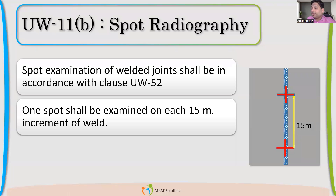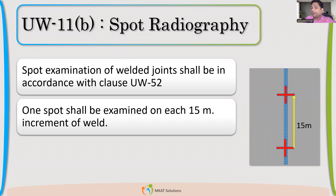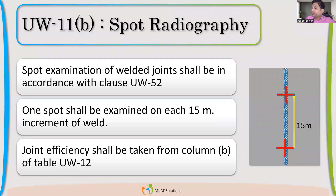Whenever there is spot radiography, we have to follow Column B of Table UW-12, from where we take the joint efficiency when we calculate. In spot radiography, the spot length is just the film length — roughly 15 centimeters long. The second film I will keep at 15 meters distance. That is how we do spot radiography, with an increment of every 15 meters.